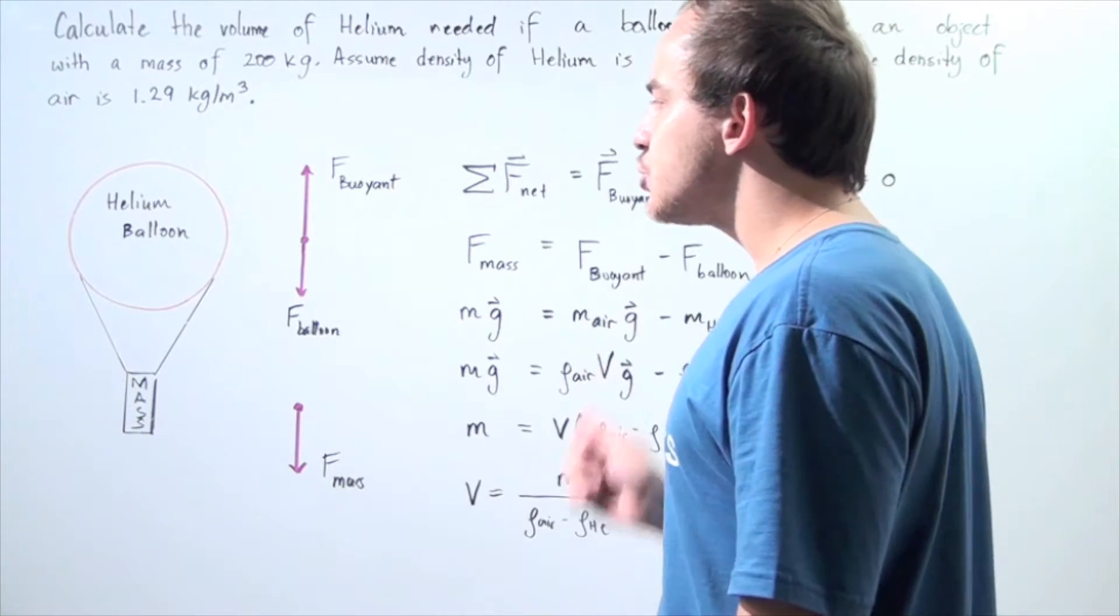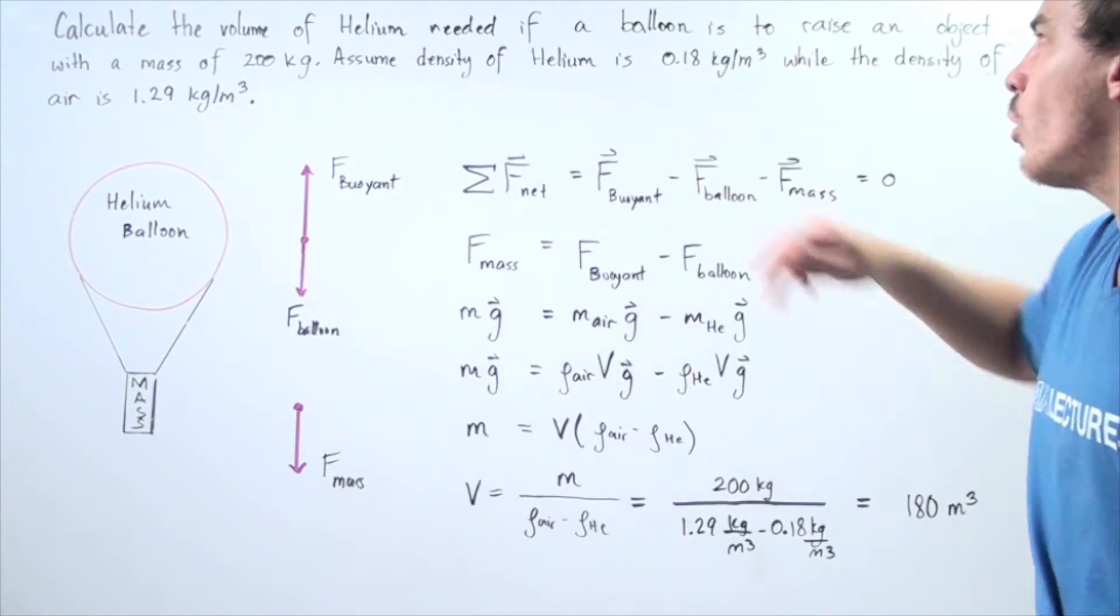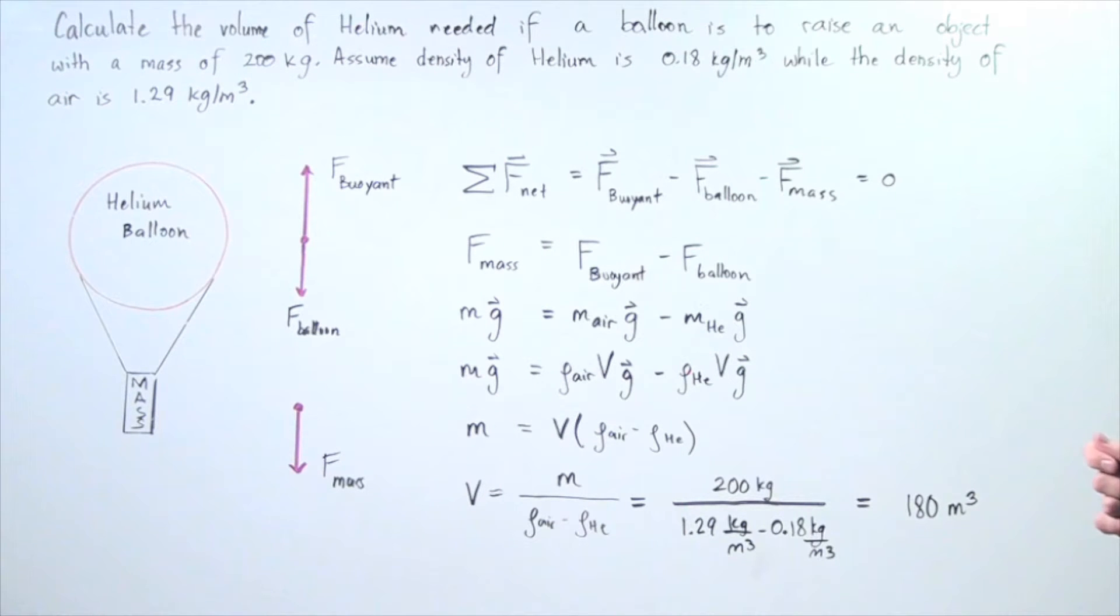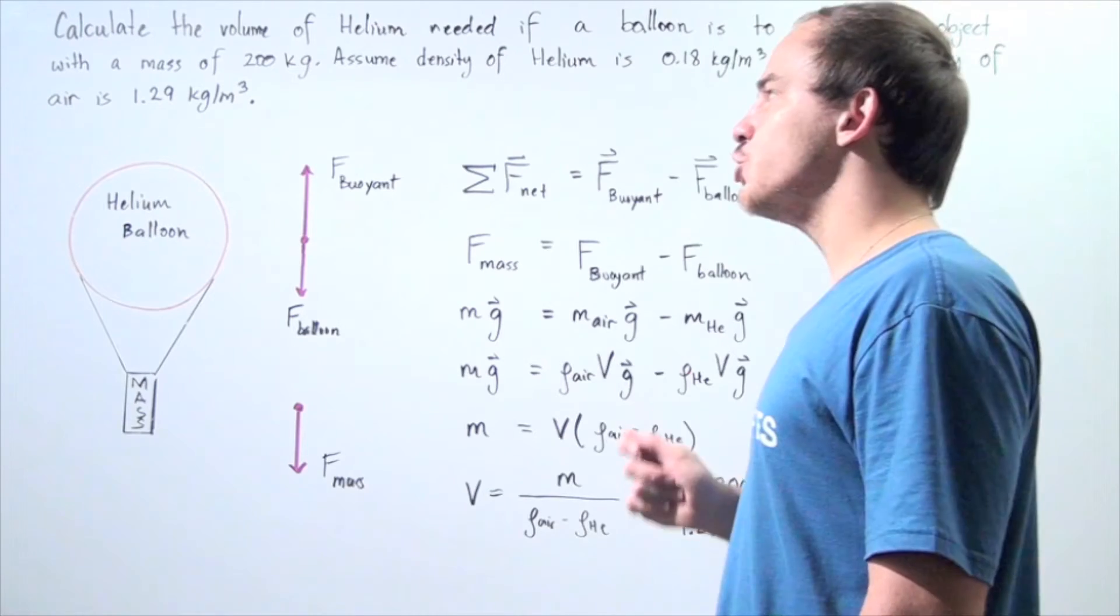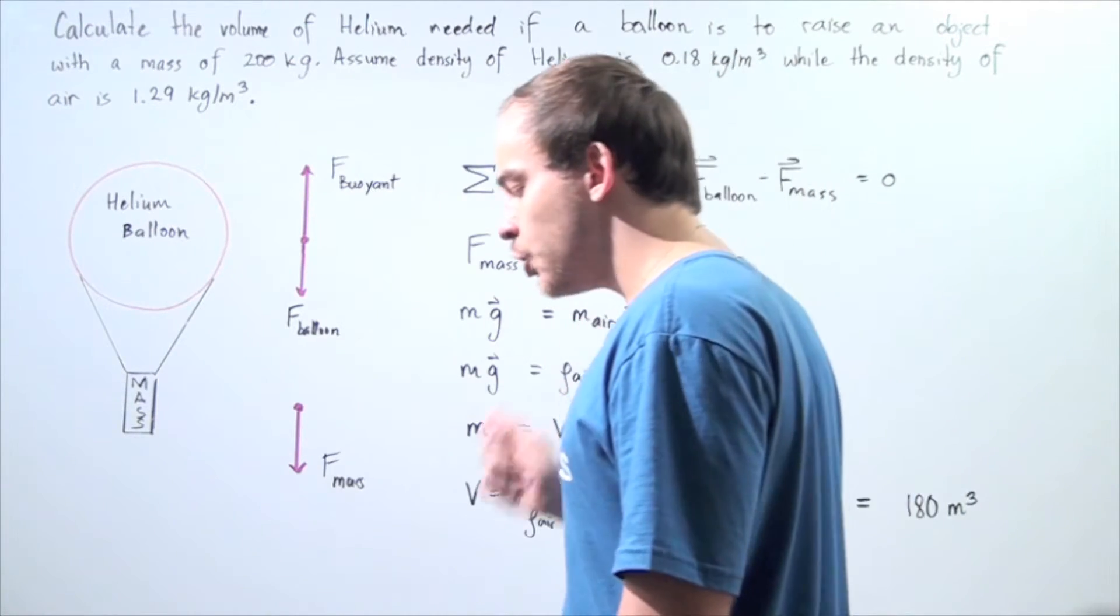We assume that the density of helium is 0.18 kilograms per meter cubed while the density of air is 1.29 kilograms per meter cubed.